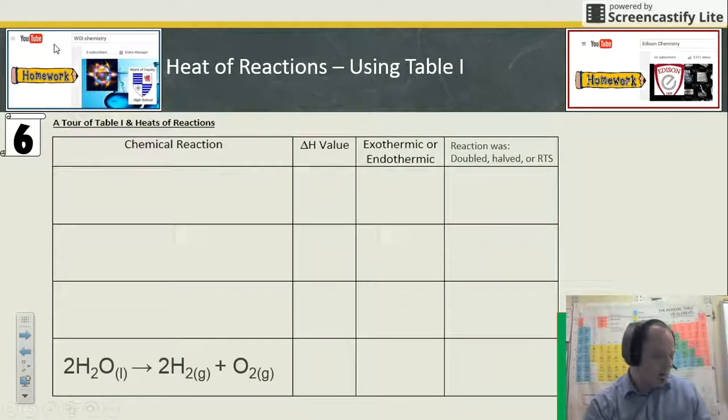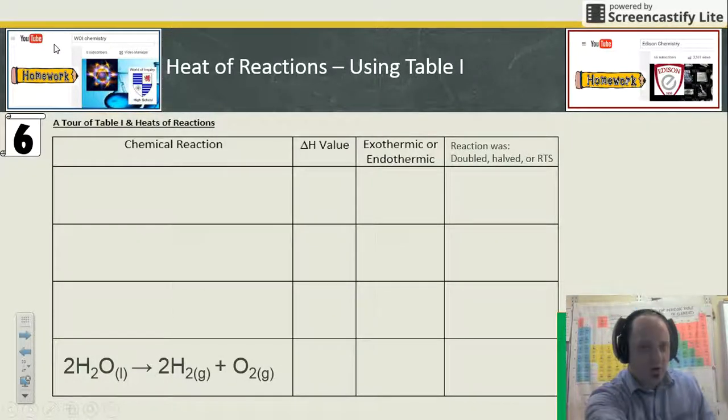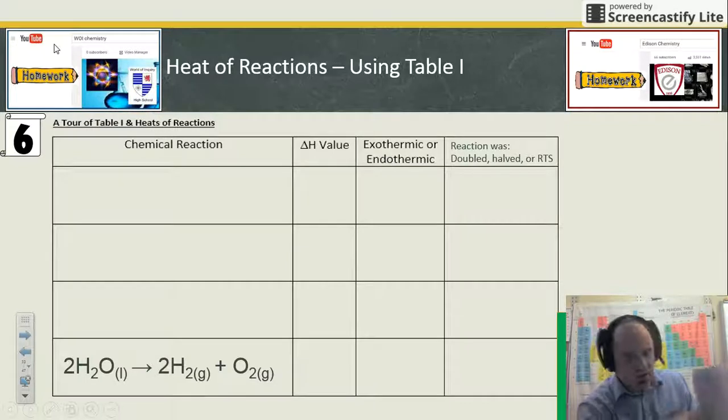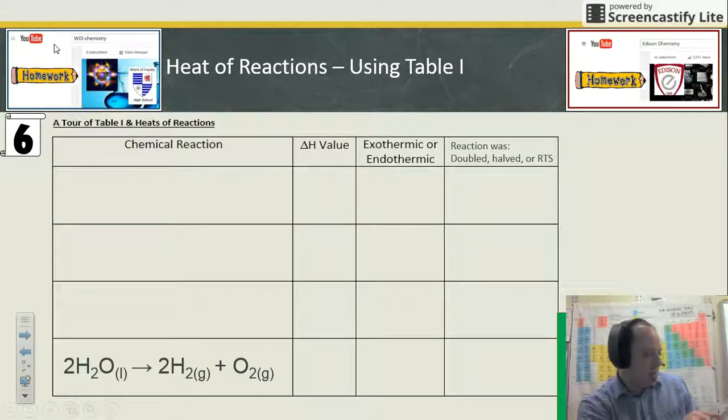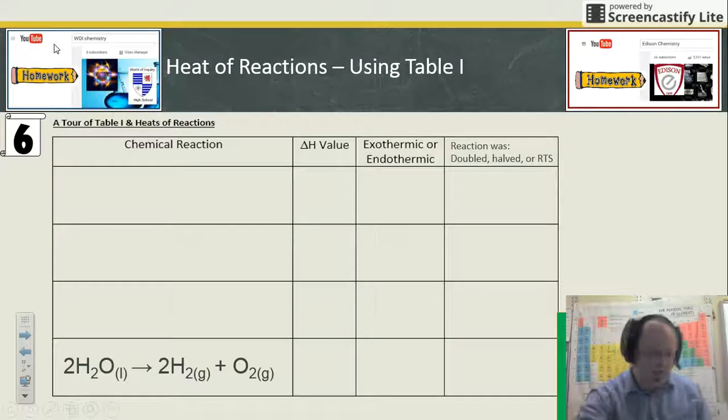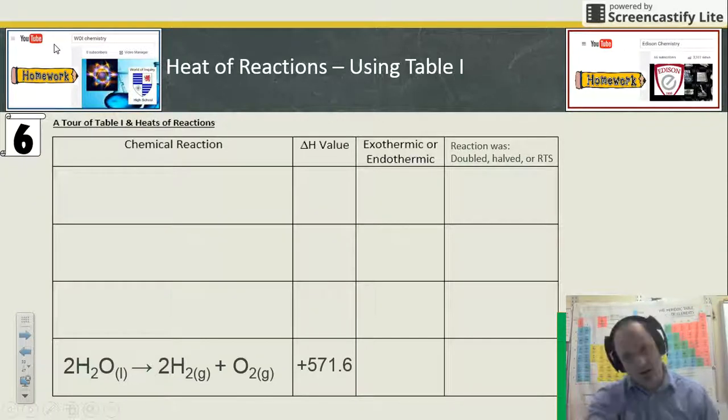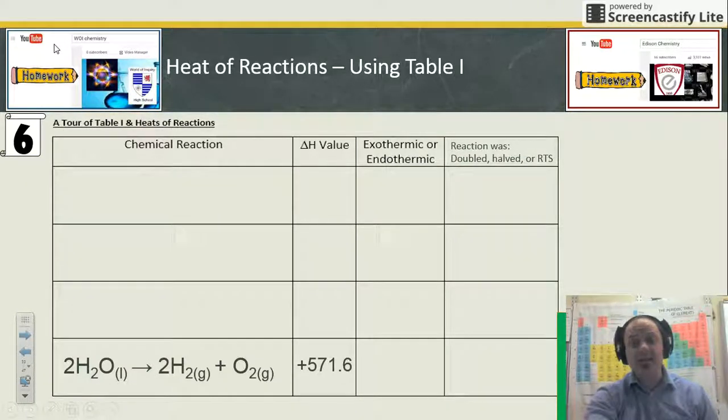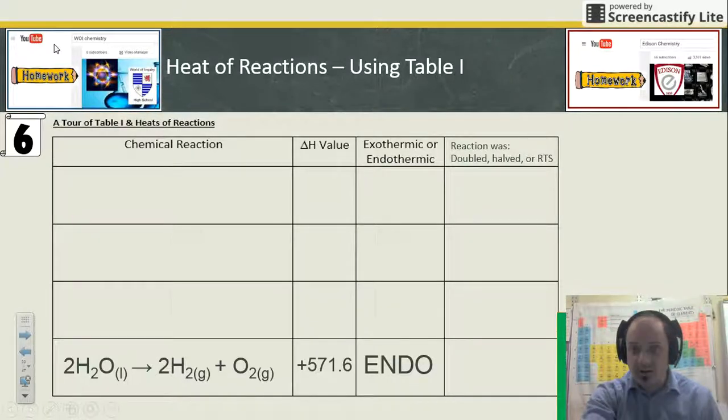Now the last one I flipped. You won't find this reaction on table I because you'll find its reverse on table I. 2H₂O liquid becoming 2H₂ and O₂, it says it's negative 571 on the chart. But remember I flipped the reaction, so we're gonna flip the sign: positive 571. That means that this is endothermic now. So the reaction was flipped, it wasn't doubled, it wasn't halved, it wasn't remaining the same. It was literally flipped.